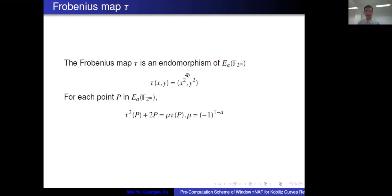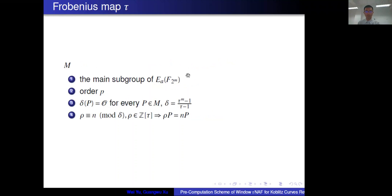The Frobenius map tau is an endomorphism of E(F_{2^M}), which is defined as the following formulae. For each point, we have this equation. Let M be the main subgroup of the group of rational points of Koblitz curves, namely the subgroup of order P. There are some properties of M. Also in this work, we mainly work on M.